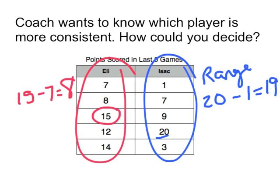Which player is more consistent, meaning his point totals are closer together? Isaac's range is larger, meaning that he is more spread out. He went all the way from 1 point to 20 points. That's very spread out.